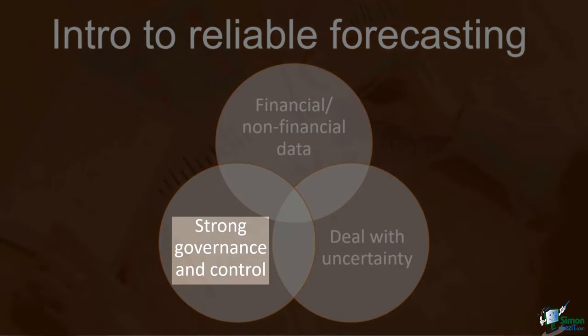Ensuring strong governance and control is the second approach. Given that forecasting data is derived from multiple sources and the potential for inaccuracy is high, strong governance and control are needed to ensure data reliability. Finance functions manage and monitor the processes, data definitions, and controls of the month-end close with considerable rigor, and they should bring a similar discipline to forecasting. Leading organizations have adopted rigorous governance and control practices around their forecasting processes.